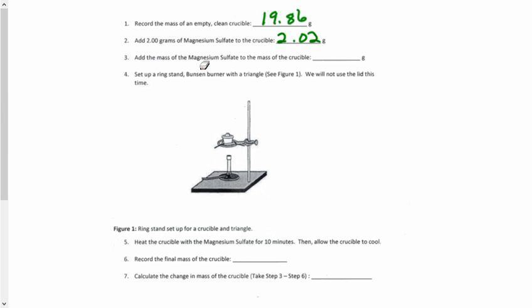Then what we do is we add those two masses together to get the total mass of the crucible, and that would be 21.88 grams, just adding those two numbers together.